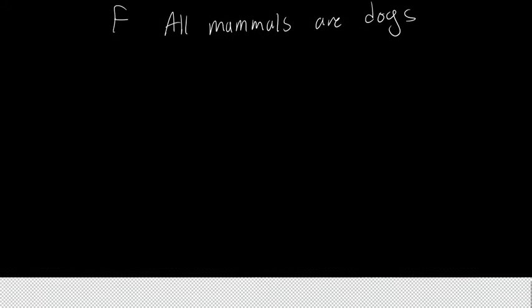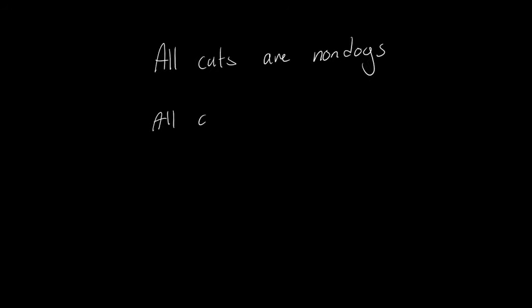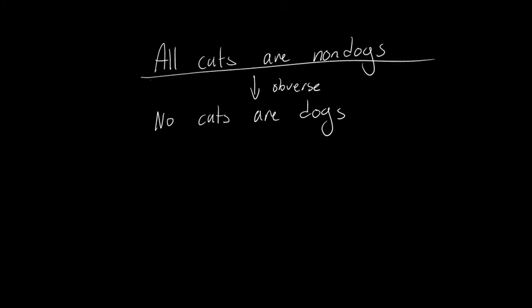One final point: what exactly can we do with this? Other than just being asked to provide the obverse, converse, and contrapositive, how can this make our lives easier? Later on when we are evaluating arguments, you may come across some annoying, complicated statements — like 'all cats are non-dogs'. Since you know that this is equivalent to 'no cats are dogs' through obversion, you can just rewrite it as the simpler statement, which is much easier to work with.